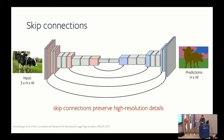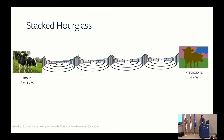Another improvement is stacked hourglass architectures. Instead of one U-Net, you stack multiple hourglasses. Because of skip connections, original information is preserved and passed forward, allowing the network to repeatedly look at the bigger picture and then upscale using fine features. Stacked hourglass is especially important for tasks requiring very tiny details like key points.